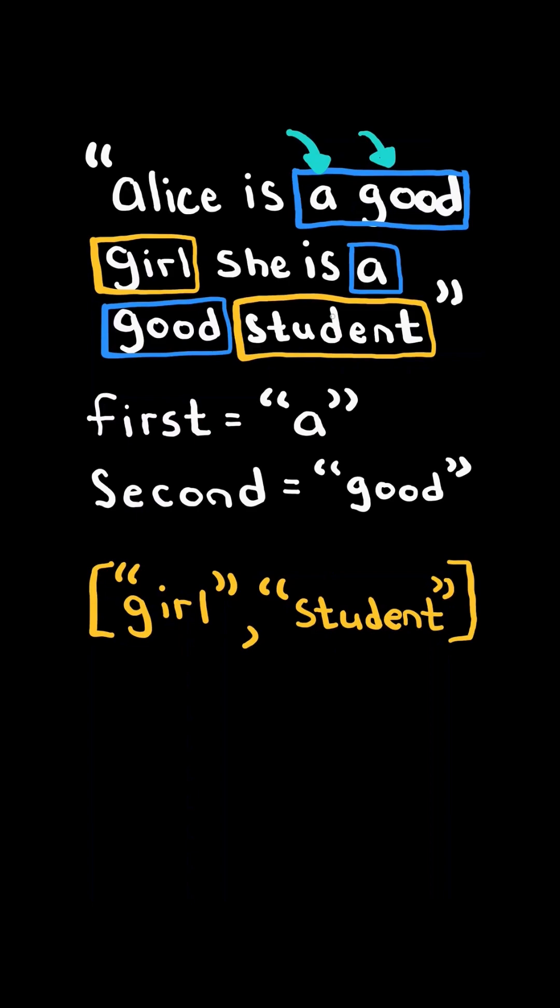In this case, we return a list of the words girl and student. We will solve this in O of n time.